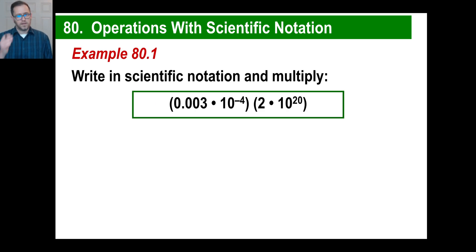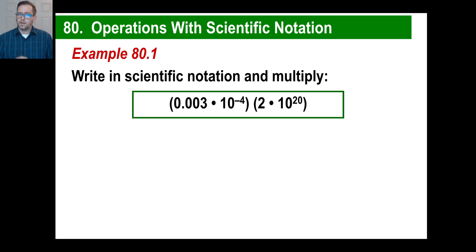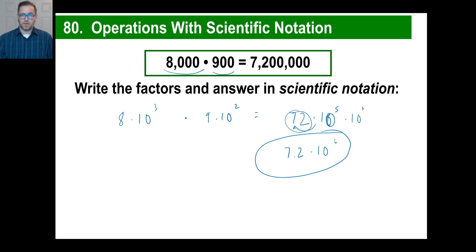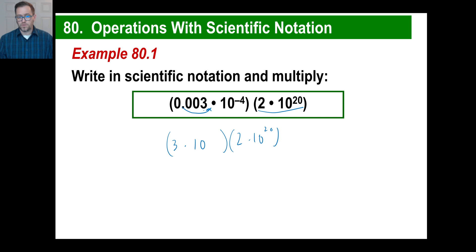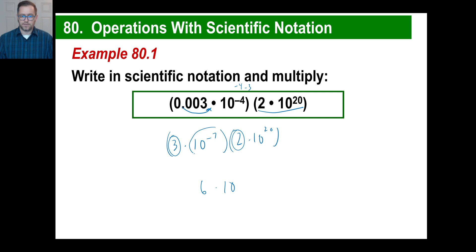Now we're going to use that method for the rest of the problems today. Copy that down and pause if you need to. This looks super complicated, but all we need to do is make sure each part is in scientific notation and then do exactly what we did. This one is going to be 3 times 10 to the negative 7 — because we multiply by 10 to the negative 3, we subtract 3 from the exponent, so negative 4 minus 3 is negative 7. The answer is 3 times 2 equals 6, and for the exponent: negative 7 plus 20 equals 13.